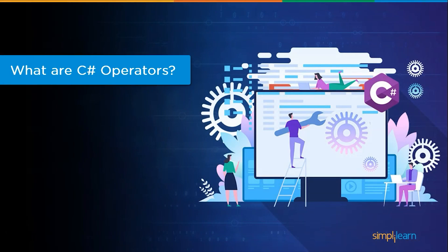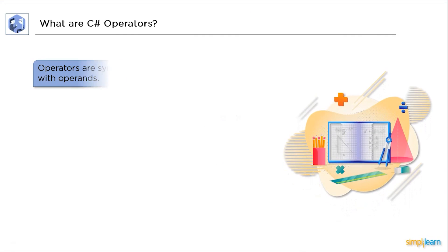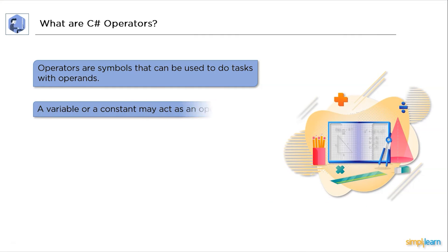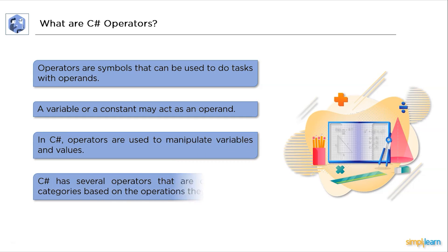Let's get started with what an operator is. Operators are symbols that can be used to perform operations on operands. An operand can be a variable or a constant. Operators are used to manipulate variables and values in C#. C# has several operators that are classified based on the operations they perform.